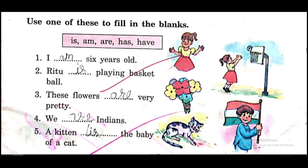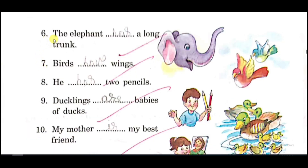Next exercise: you have to use is, am, are, has, or have. First: after 'I' we use am — I am six years old. Second: Ritu is playing basketball. Third: These flowers are very pretty. Fourth: We are Indians. Fifth: A kitten is the baby of a cat — after 'kitten' we use is. Sixth: The elephant has a long trunk — after 'elephant' we use has.